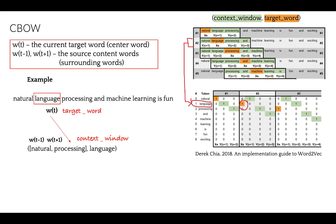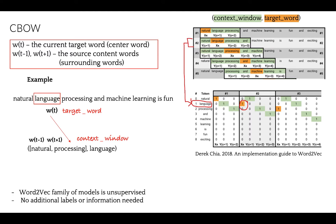The context window defines a number of words on the left and right of our target centered word. Looking at the representation of our small sentence, we have a vocabulary of four words, and 'language' is our target word, defined as one. Because the Word2Vec family of models is unsupervised, you can give it a corpus without additional labels or information, and it can construct dense word embeddings from the corpus. Recall that bag of words produces sparse word matrices, whereas word embedding gives you a dense representation.